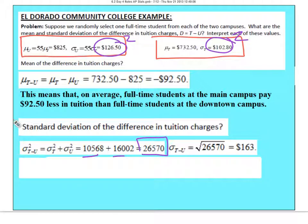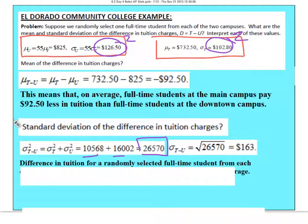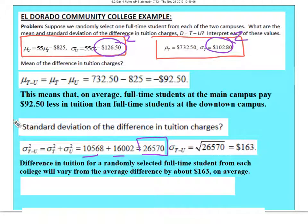What does that mean? The difference in tuition for a randomly selected full-time student from each college will vary on average by about $163. So if I randomly select one student from the downtown campus and one from the main campus, on average I'll be within $163 difference in what they pay in complete tuition.